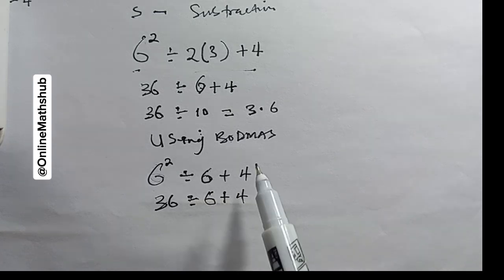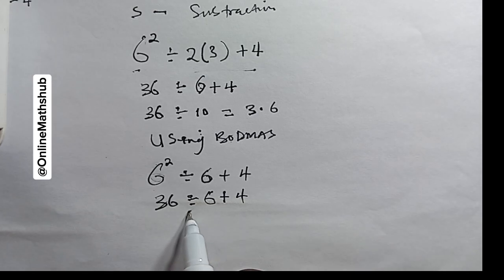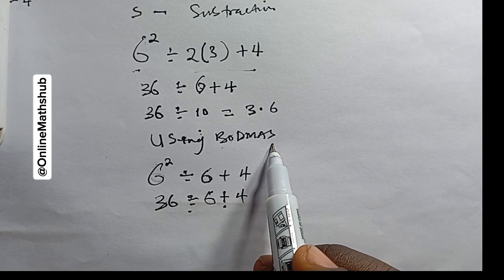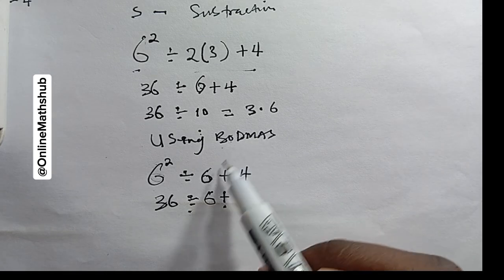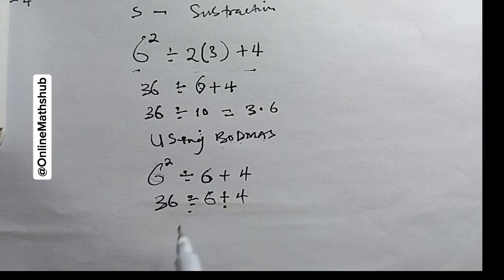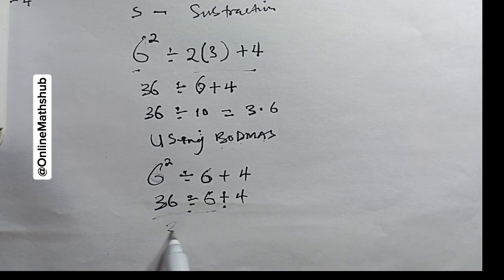Next, we have division and addition. In BODMAS, division comes before addition, so I'll simplify the division first: 36 divided by 6.